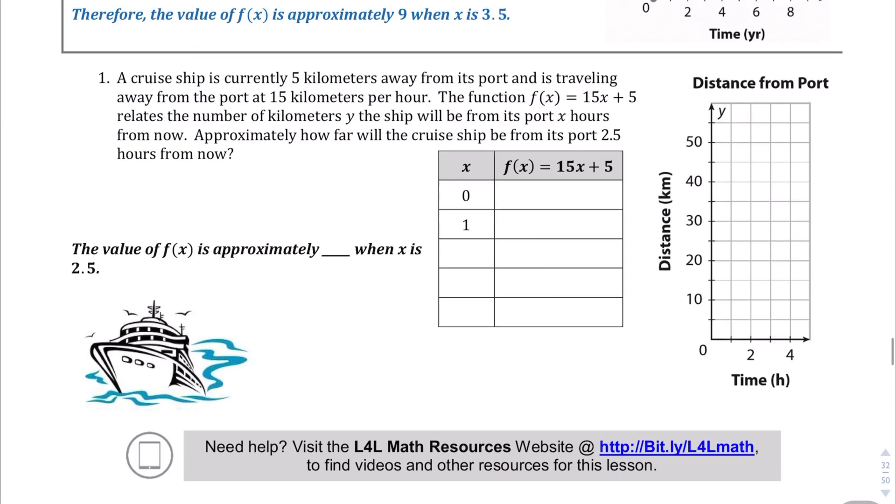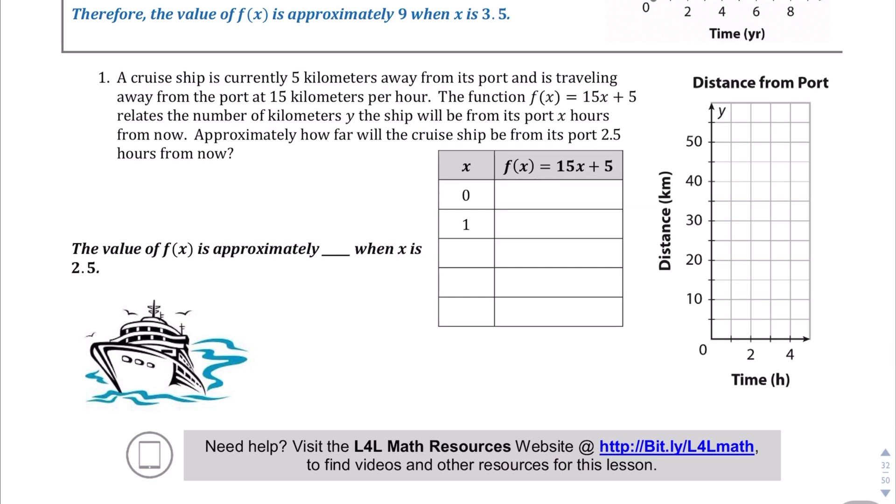I'm going to let you go through Example A on your own, but in question number one, the cruise ship is currently five kilometers away from its port, which explains the five there, and it's traveling away from the port at 15 kilometers per hour. So we're tracking the distance from the port here.